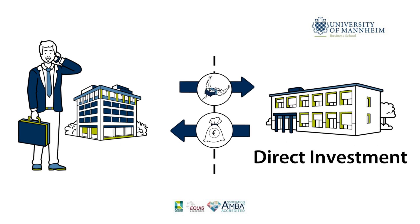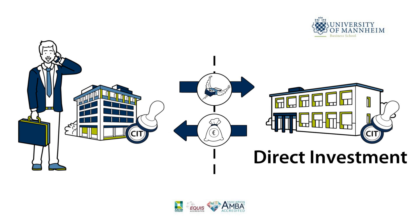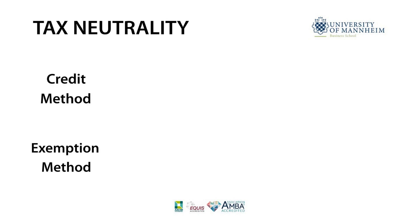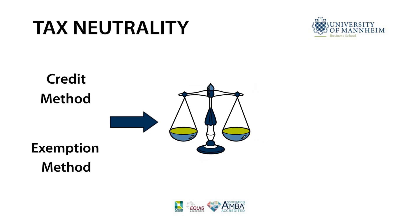The profits are taxed twice, namely in the foreign and domestic country. Countries can adopt the credit or exemption method to reduce or avoid international double taxation. These methods aim at establishing tax neutrality for cross-border investments, meaning taxation should not distort investment decisions.